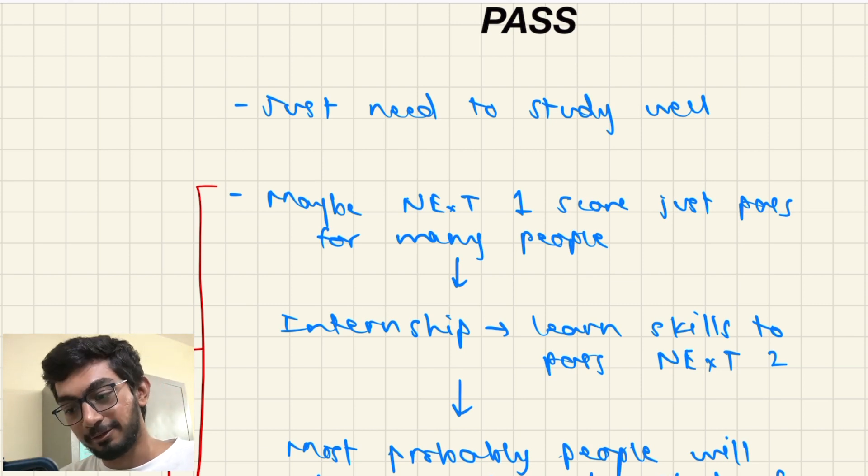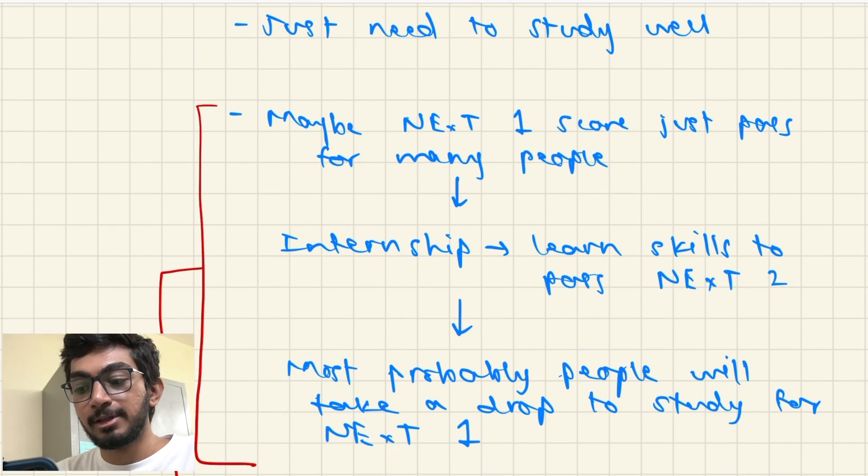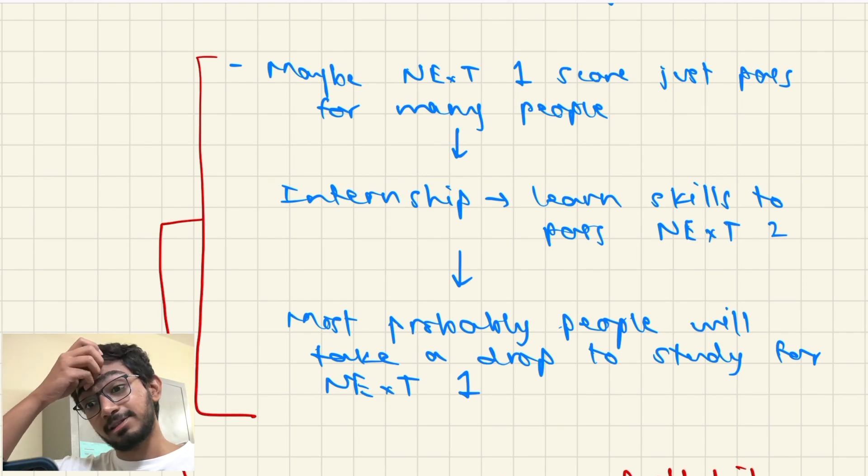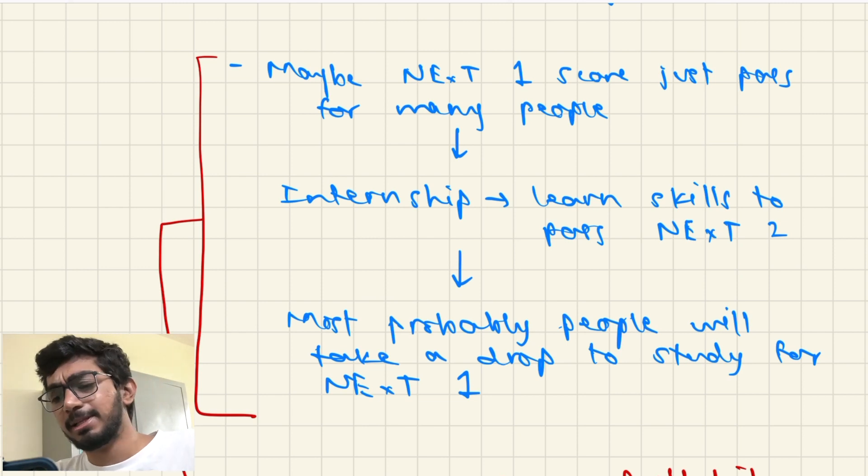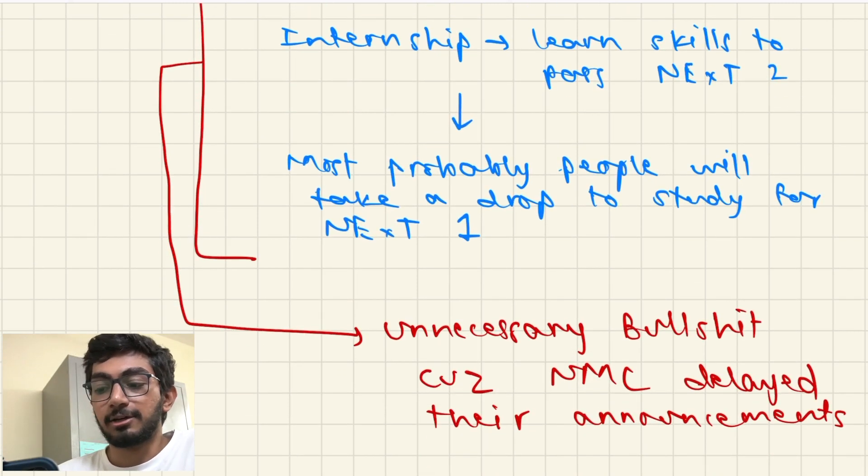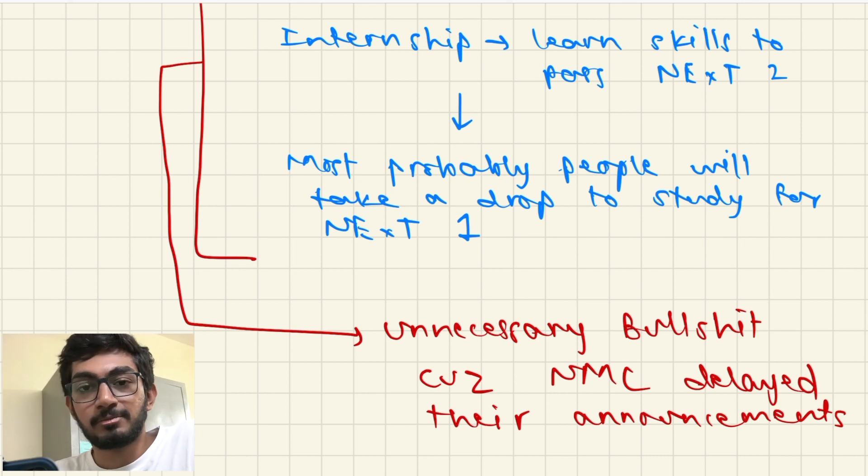Yeah, you just need to study well in your final year third, minor, and of course first and second years have a lot of time to prepare. They know exactly what is going to happen with them, they'll have a lot of previous year questions also. What will happen with the current final year batches is what I feel - maybe you will give NEXT Step 1 and you'll get a passing score and many people will be under this category. You'll start your internship, you'll learn skills to pass your NEXT Step 2 exam, and then most probably you will take a drop and study again for NEXT Step 1 to improve your score to get into your choice of PG. So yeah, this is just some unnecessary process that NMC has created for the current final year students.